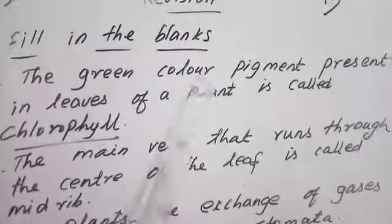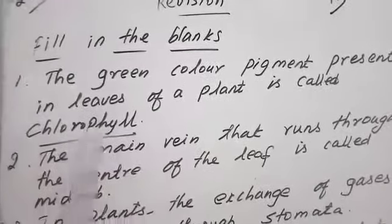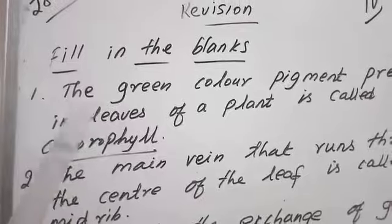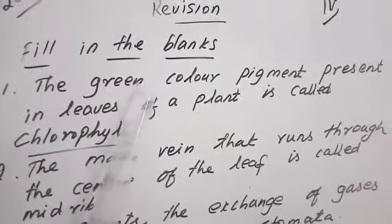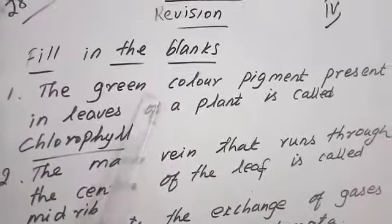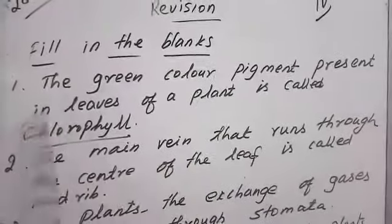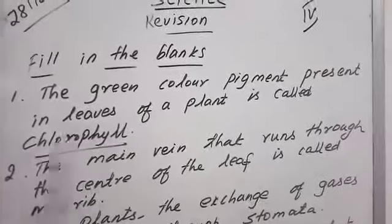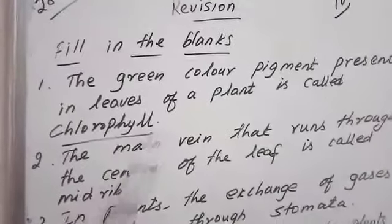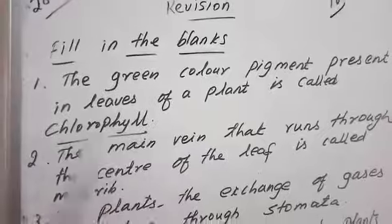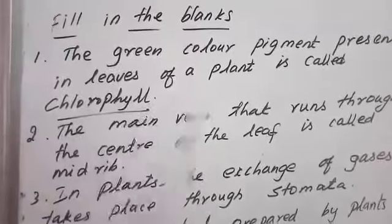The green color pigment present in leaves of a plant is called chlorophyll. We have learned this lesson, isn't it? The green color — if you take the leaf, what is the color of the leaf? It is green color. The green color pigment present in leaves of a plant is called chlorophyll: C-H-L-O-R-O-P-H-Y-L-L, chlorophyll.